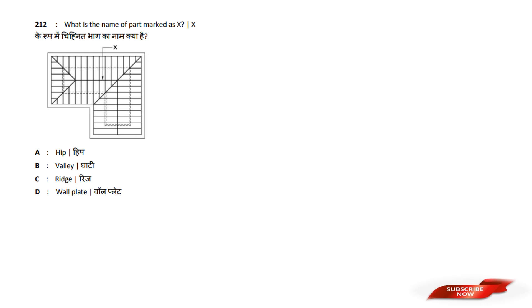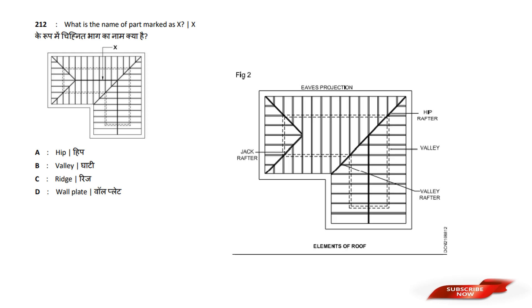What is the name of the part marked as X? Options are: A) Hip, B) Valley, C) Ridge, D) Wall Plate. Answer option C.